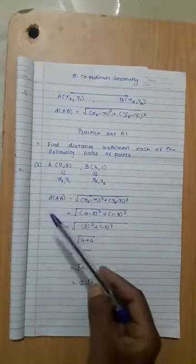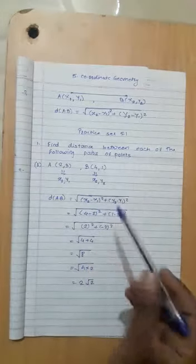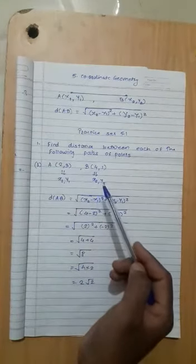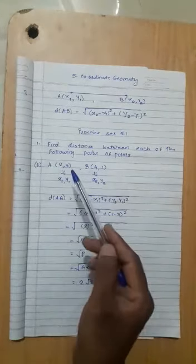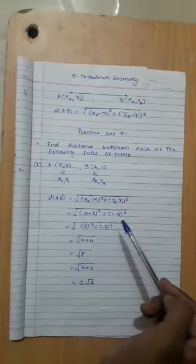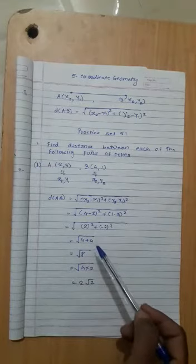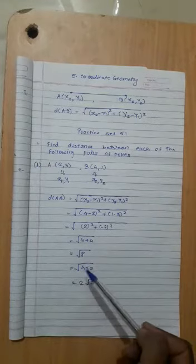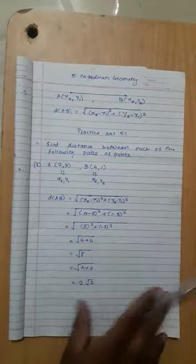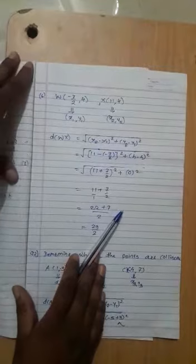Put the values: x2 is 4, x1 is 2, y2 is 1, y1 is 3. So (4 minus 2) squared plus (1 minus 3) squared equals (2) squared plus (-2) squared, which is 4 plus 4 equals 8. Factor as 4 into 2, so square root gives 2 root 2. The distance between A and B is 2 root 2.